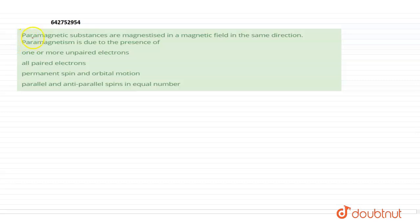The question says that paramagnetic substances are magnetized in a magnetic field in the same direction. Paramagnetism is due to the presence of: one or more unpaired electrons, all paired electrons, permanent spin and orbital motion, or parallel and anti-parallel spins in equal number.